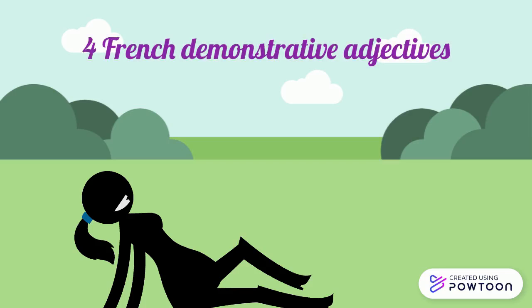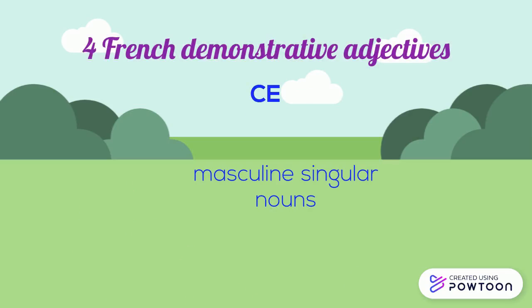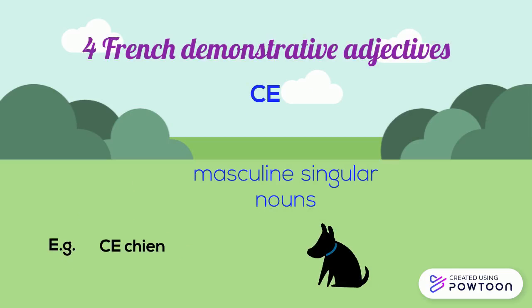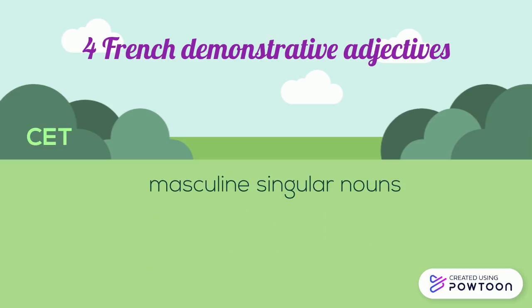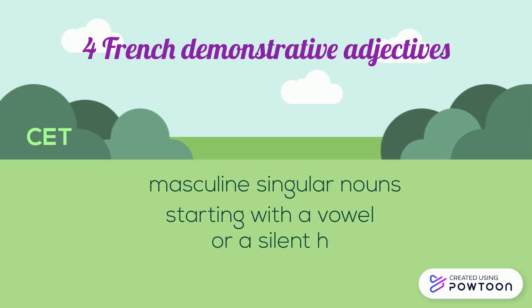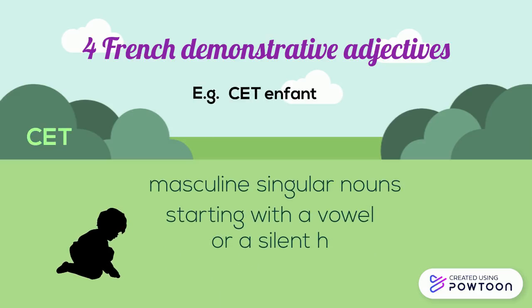The four demonstrative adjectives in French are: 'ce' for masculine singular nouns — for instance, 'ce chien' (this/that dog); and 'cet' for masculine singular nouns starting with a vowel or silent h — for instance, 'cet enfant' (this/that child).